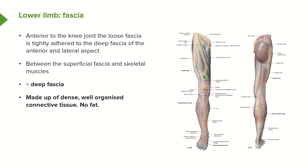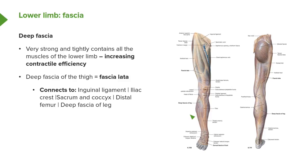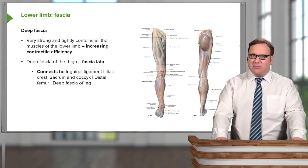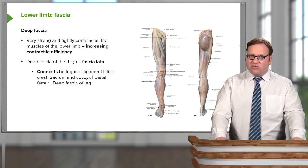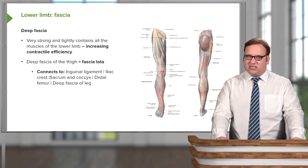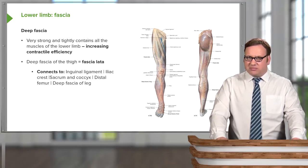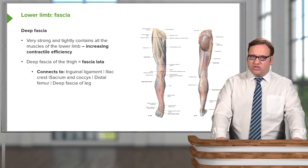The deep fascia, similar to the fascia of the upper limb, is made up of dense, well-organized connective tissue, and there's no fat. The deep fascia is very strong and it tightly contains all the muscles of the lower limb. This increases the contractile efficiency, so the direction of pull from these muscles when they contract is controlled and very streamlined.